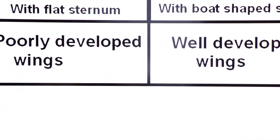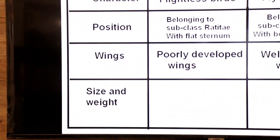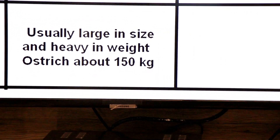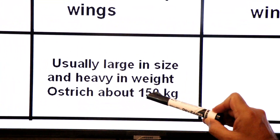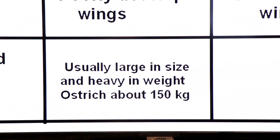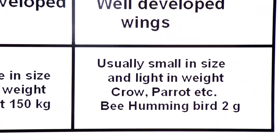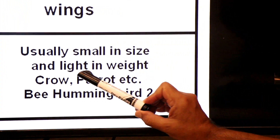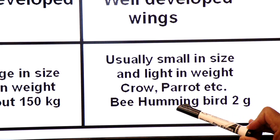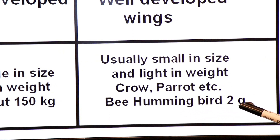There is also a difference in size and weight. Flightless birds are usually large in size and heavy in weight — for example, an ostrich weighs about 150 kg and cannot fly, with poorly developed wings. Flying birds are usually small in size and light in weight — for example, crow, parrot, etc. The smallest bird is the hummingbird, weighing only 2 grams.